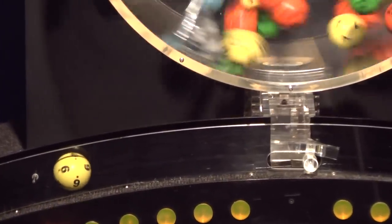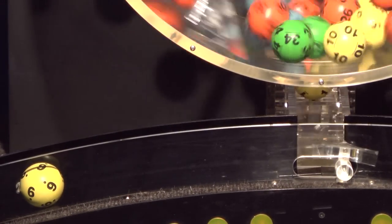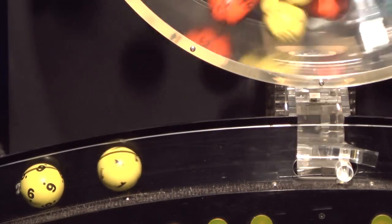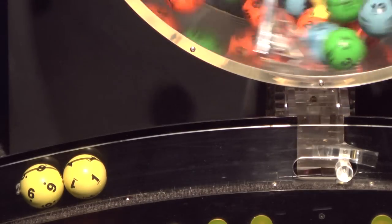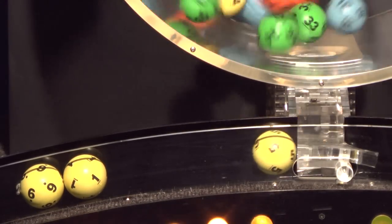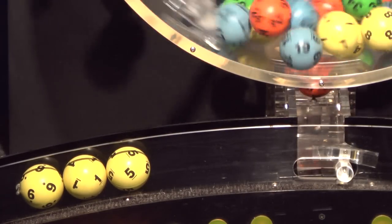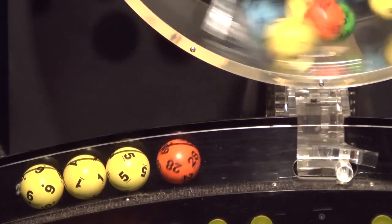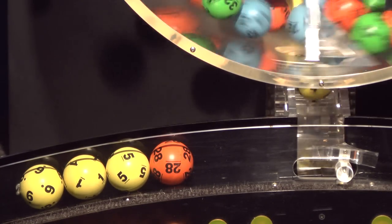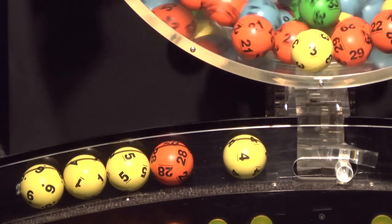Our first number up is number 6. And after that we have number 1. Rolling right behind that is number 5. And here comes number 28. And the final ball in this sequence is number 4.